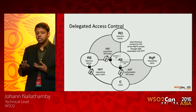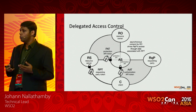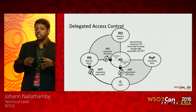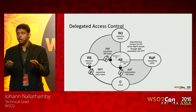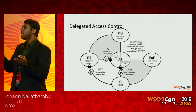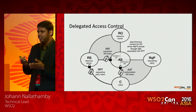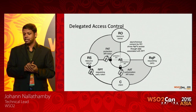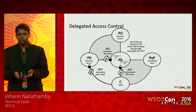UMA introduces a new party — the requesting party, which is a human being. You are delegating privileges to another human being, possibly for a limited time. A good use case: if you are a senior manager going on vacation, you want to delegate some of your privileges to a subordinate. Earlier there was no standard for this — UMA is what tries to solve this very common requirement.